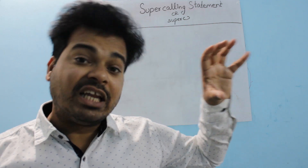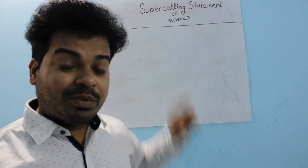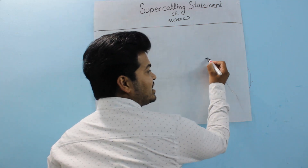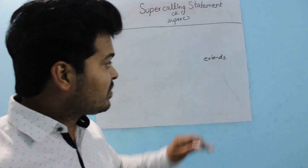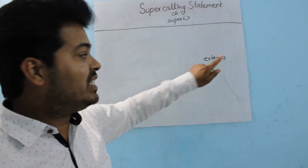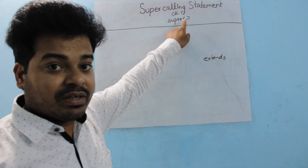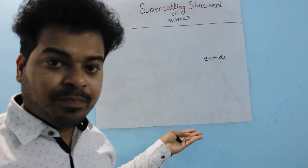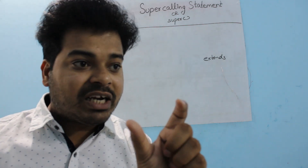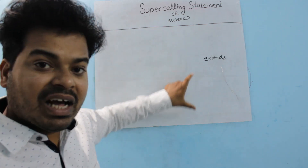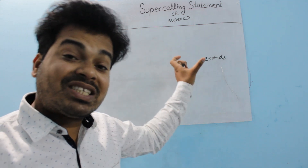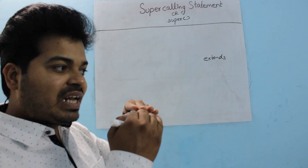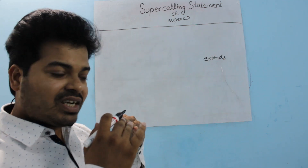To summarize: the super calling statement is used only in the case of inheritance. Wherever you see the 'extends' keyword in a program, that means it is related to inheritance and you can use the super calling statement. It is used to call from a subclass constructor to the immediate super class constructor, where each class has a special method called a constructor.